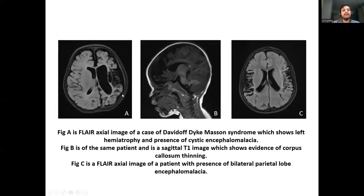A FLAIR axial image of a case of Davidoff-Dyke-Mason syndrome shows left hemiatrophy and cystic encephalomalacia. Figure B is a sagittal T1 image of the same patient showing corpus callosal thinning. Figure C is a FLAIR image of a patient with bilateral parietal lobe encephalomalacia.